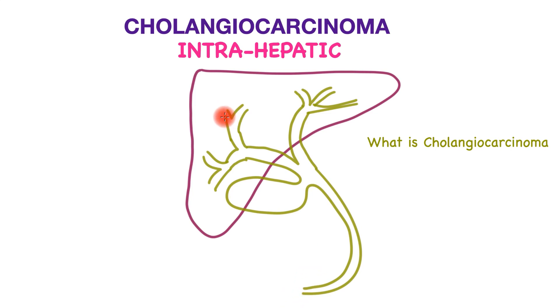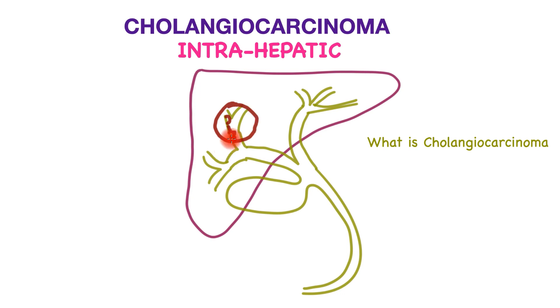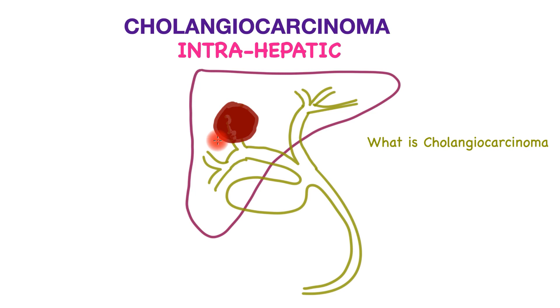Cancers may arise from the lining of these bile tubes, the epithelial layer, and thus form a mass within the liver. If untreated, this may increase in size and spread to other parts.